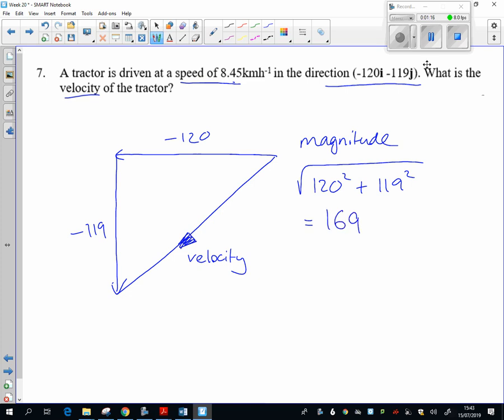So that's what the speed would be if this was the velocity. So if it was traveling 120 kilometers per hour that direction, 119 kilometers an hour that direction, then the speed would be 169, and it's not. It's way, way slower than that.